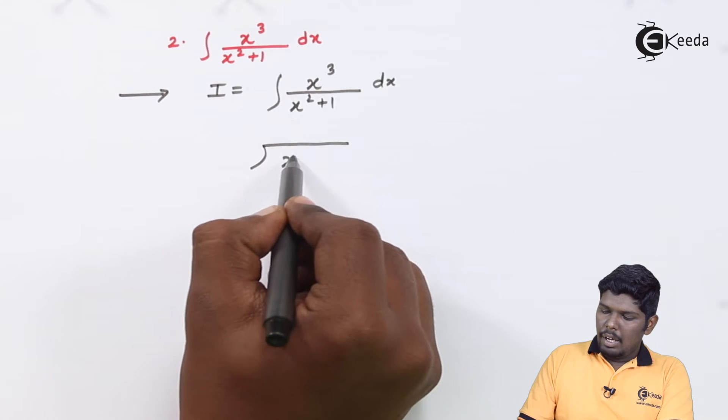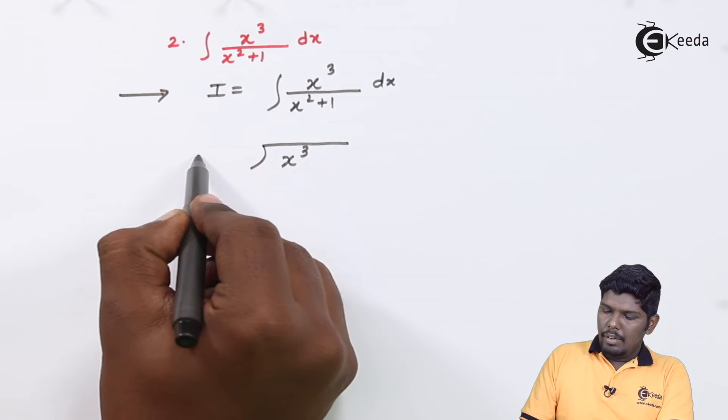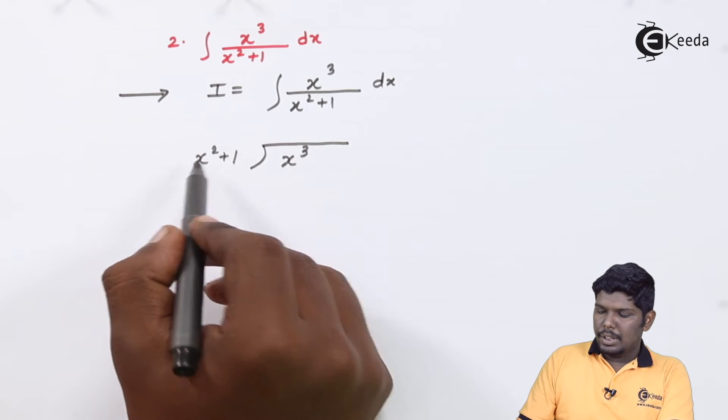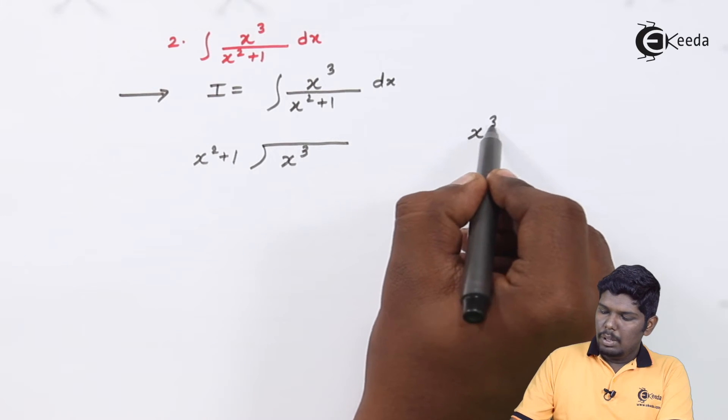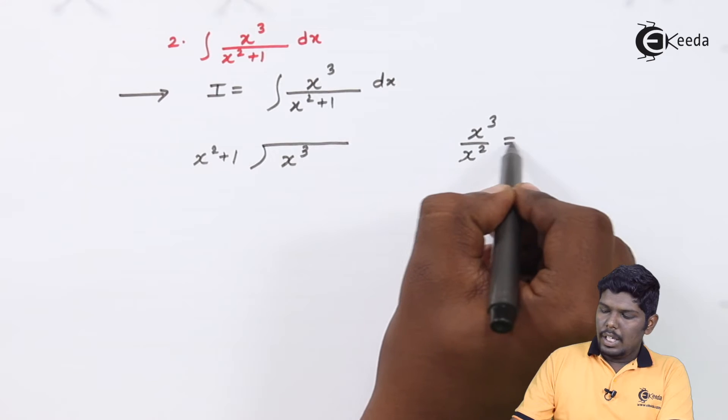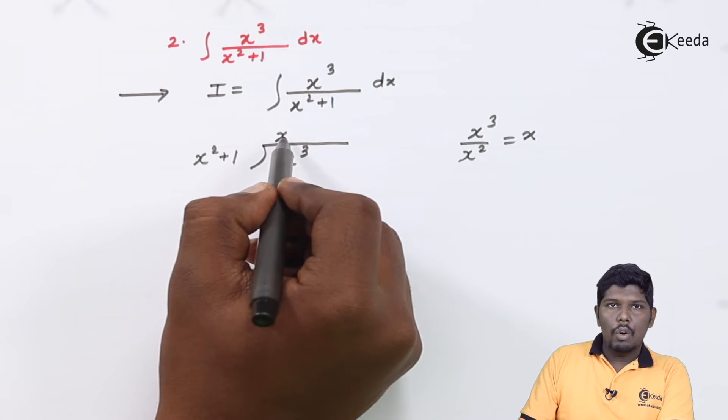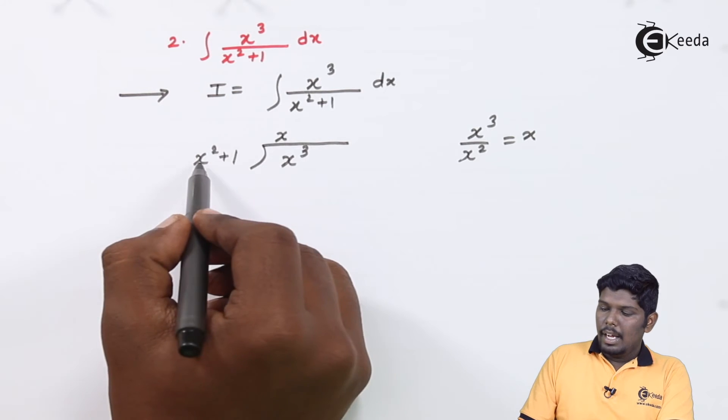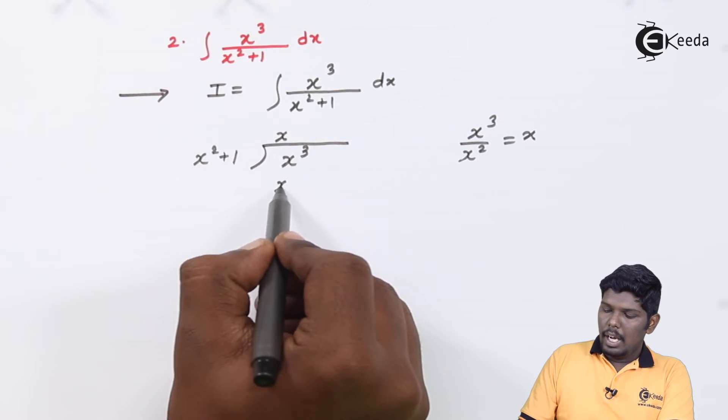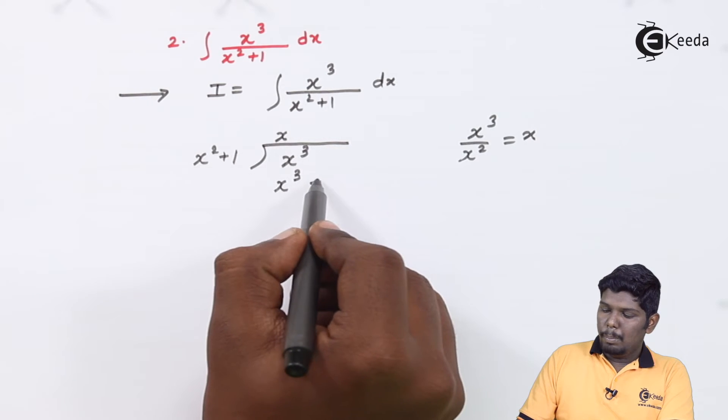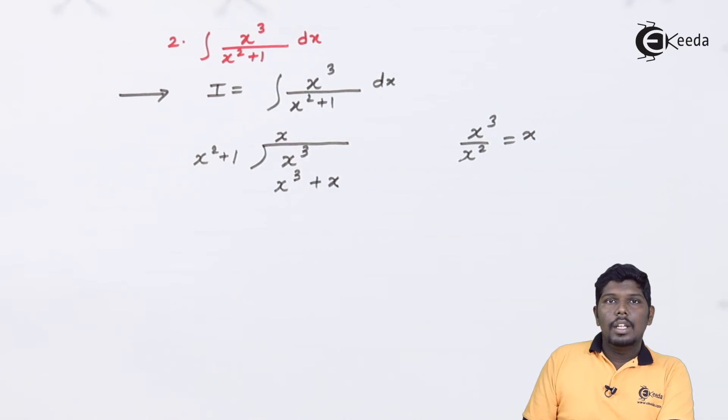Therefore, we have x³ divided by x²+1. To divide this equation, we will divide first term by first term. That is x³ upon x² will give you x and that x will be written at the quotient form. Now let us multiply. x² into x will give you x³ and plus 1 into x will give you plus x.